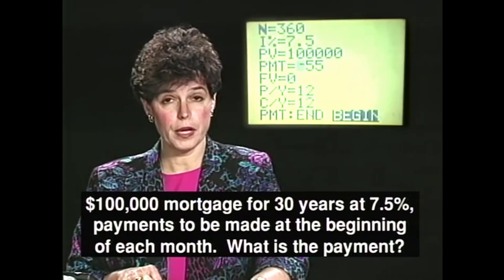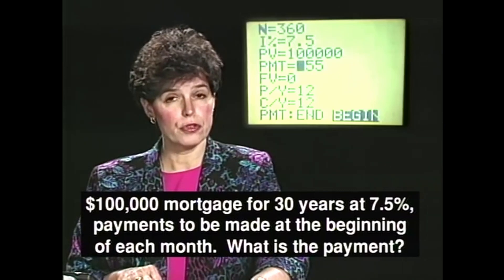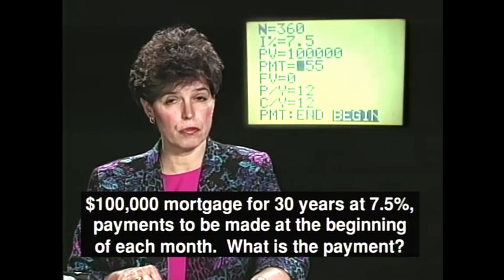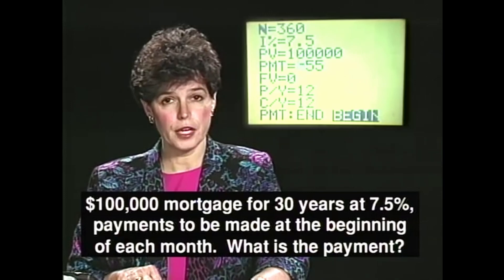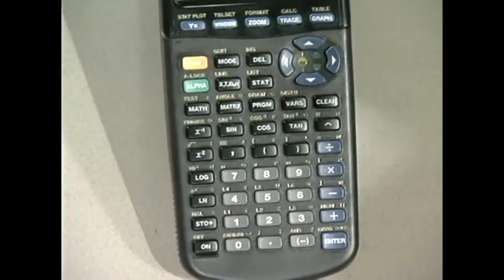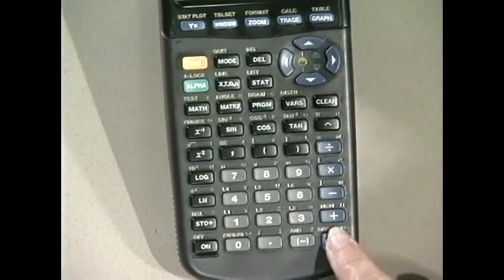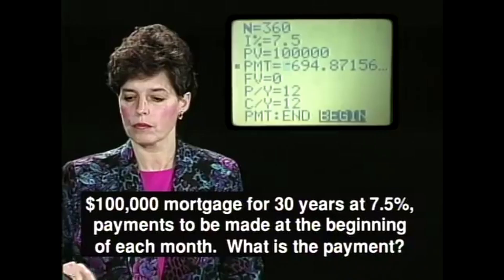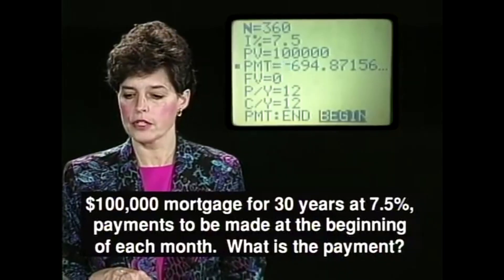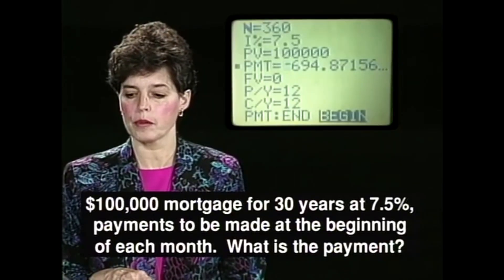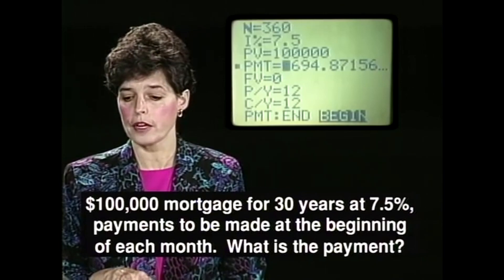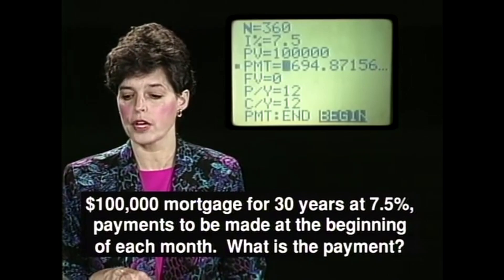Since my cursor is now on payment, I'll be able to get the answer. In order to solve with this TVM solver, you'll have to notice that on your keyboard it says solve, right down there at the bottom, above enter, and it is written in green. So do alpha, solve, and I see that my calculator tells me that my monthly payments are going to be $694.87.